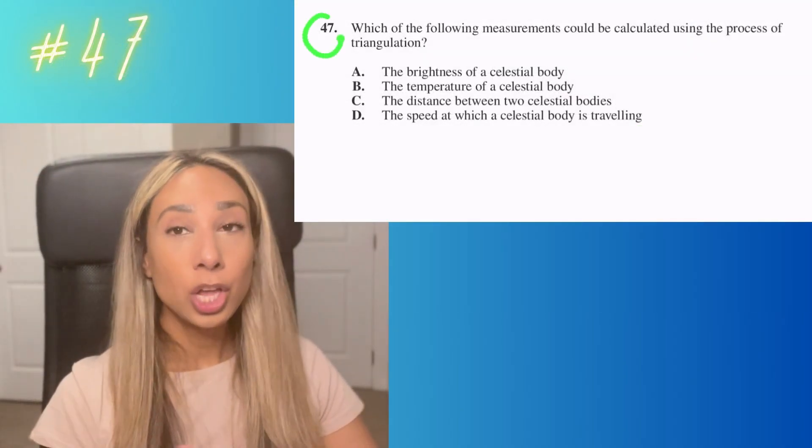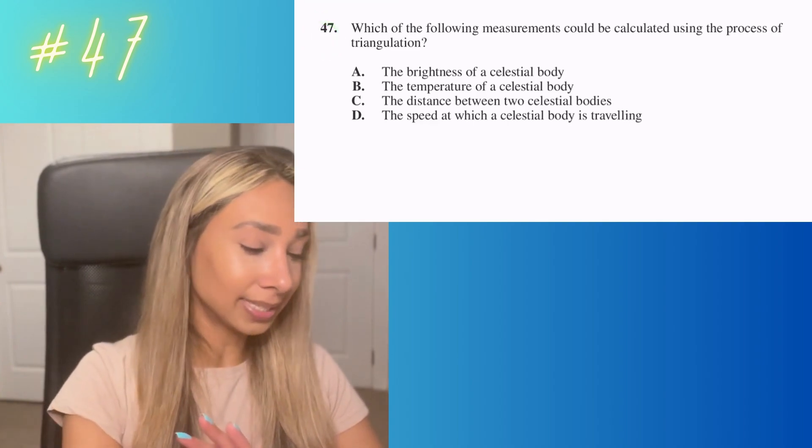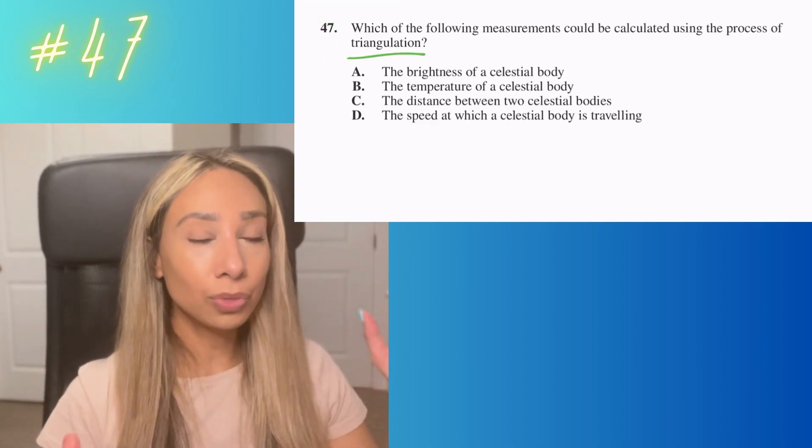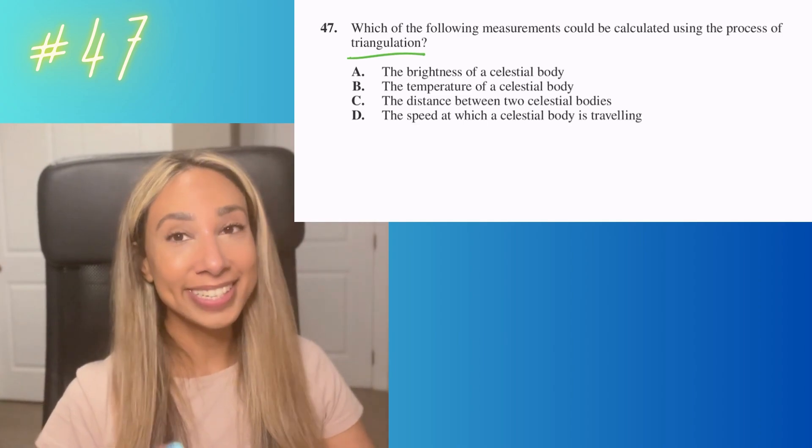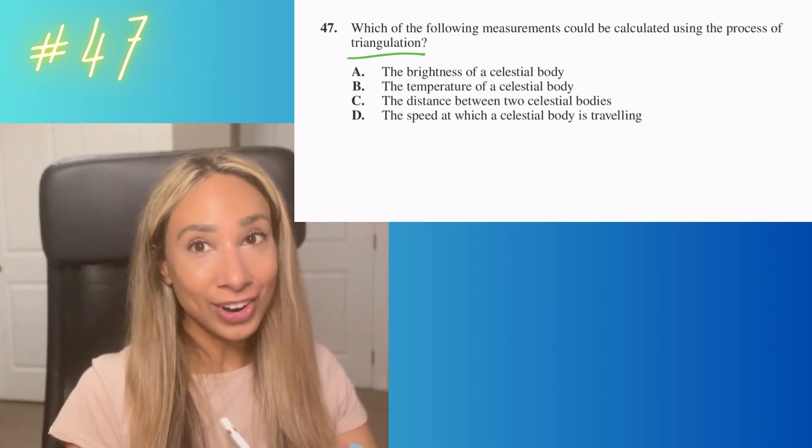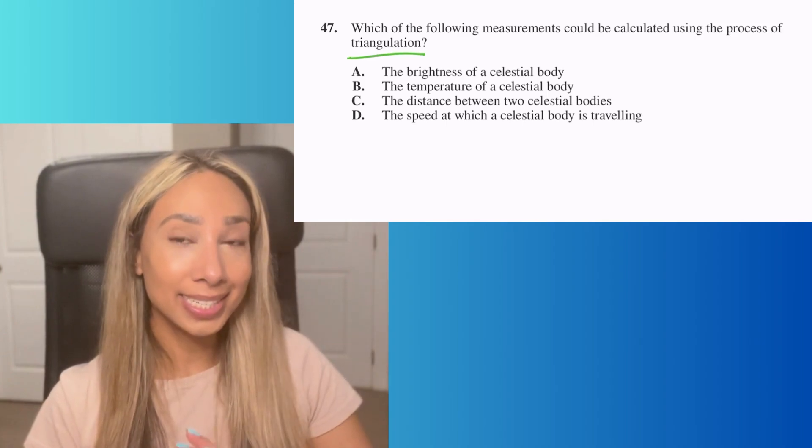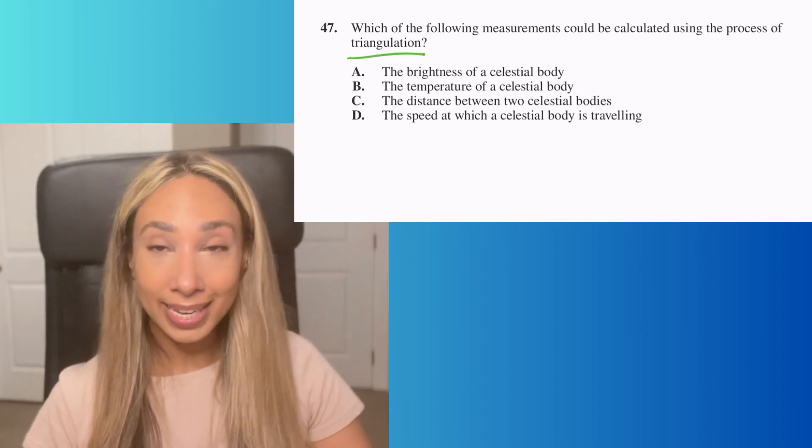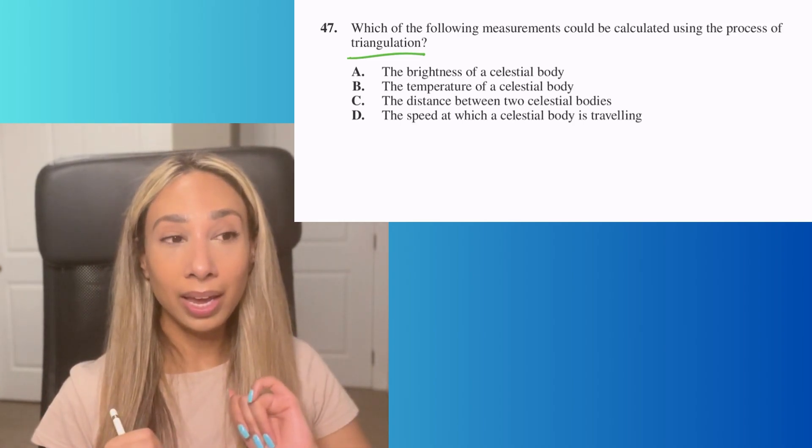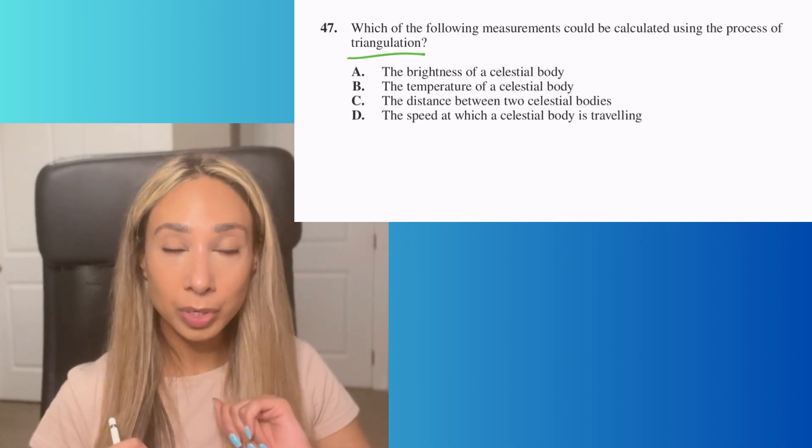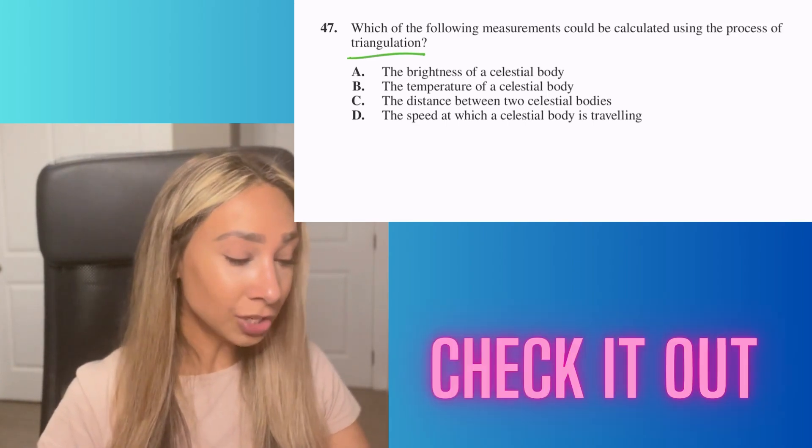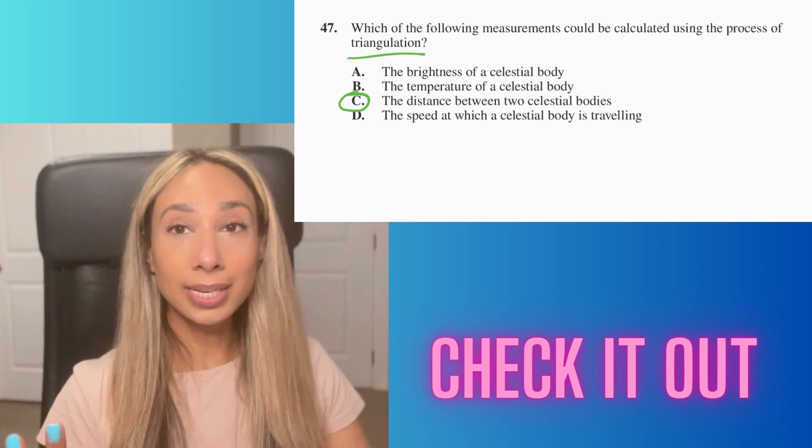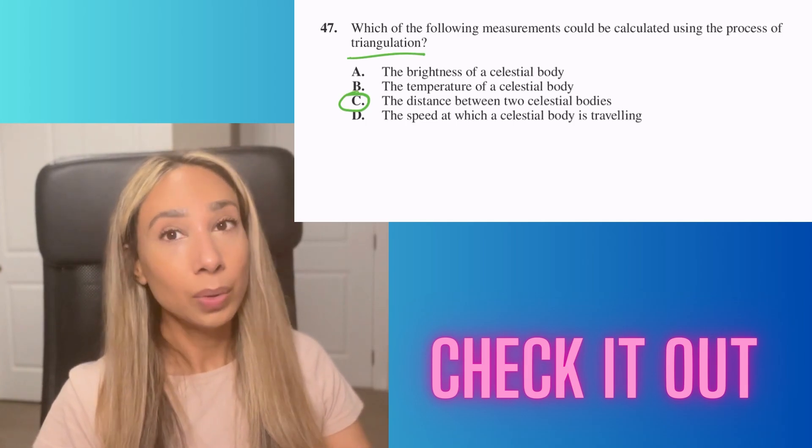Number 47. This question is asking if you know what triangulation is or what it's used for. Through similar triangles and using angles on Earth, you can predict the distance of something else using the correct angles. The answer is only C because triangulation is used to help figure out the distance between two objects.